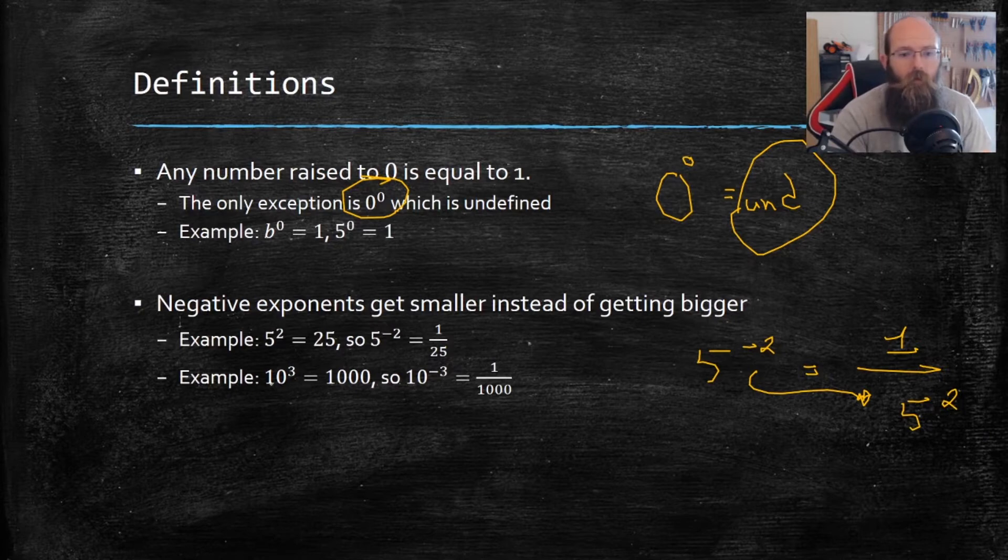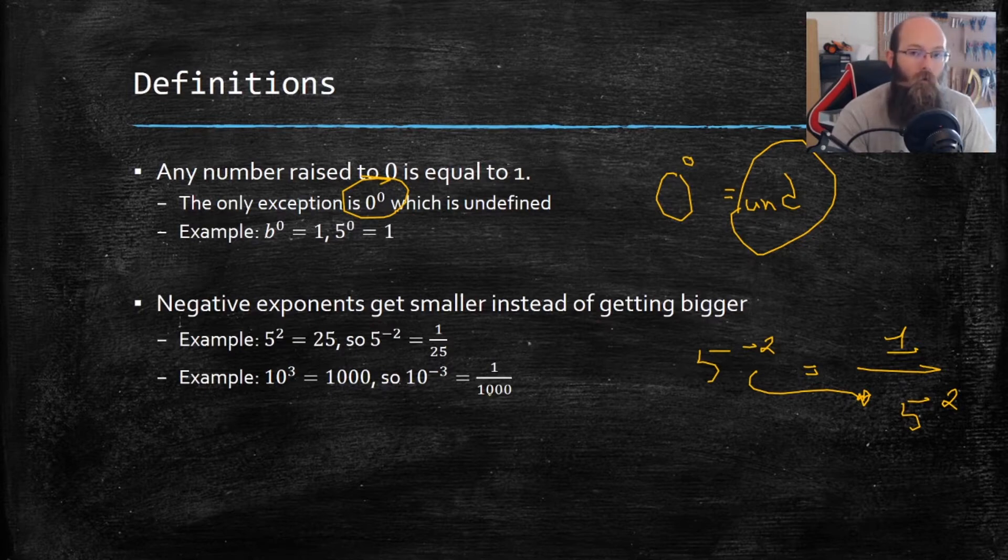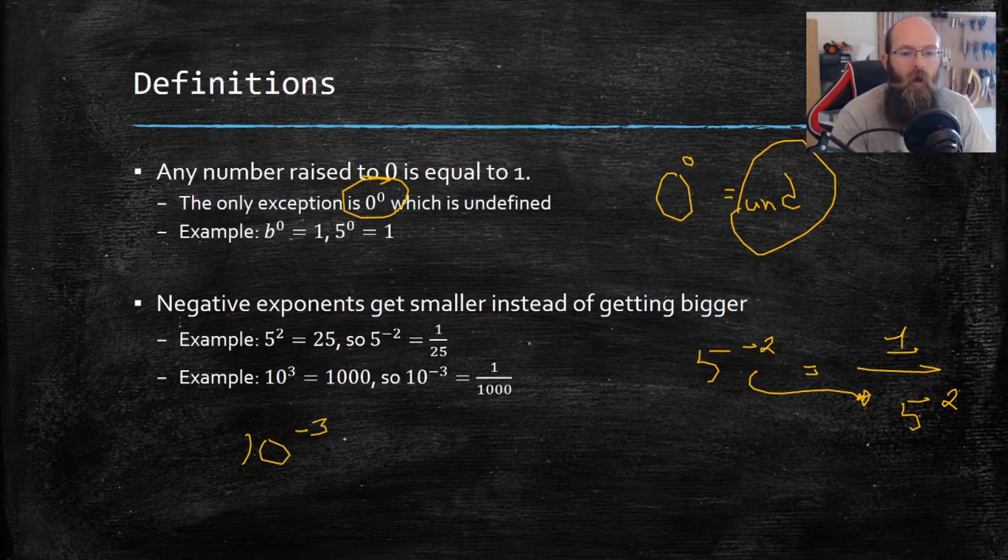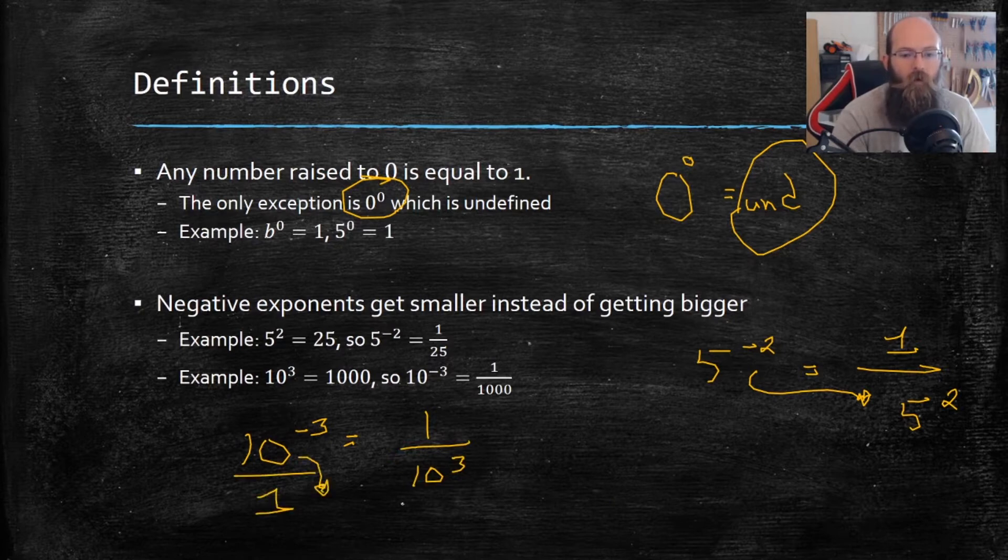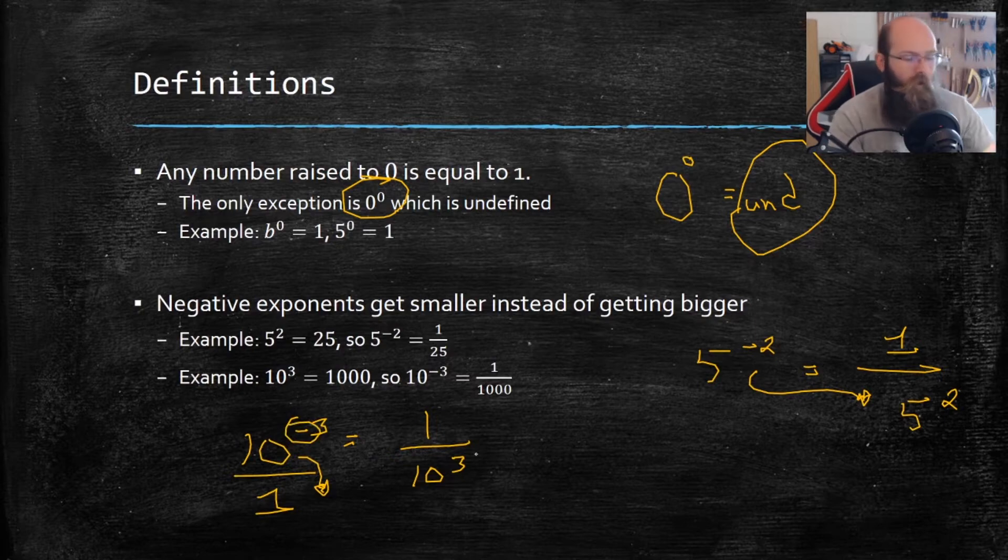Same thing with this next example: 10 cubed equals 1000, but 10 to the negative three is one over 1000. And that's because 10 to the negative third power is like one over 10 cubed. When I move across that division bar, when I move this down, it changes its sign from negative to positive. Let's go check out some more examples.